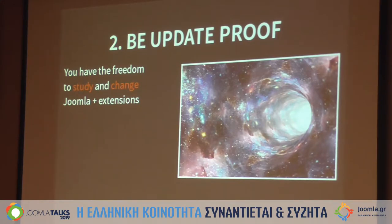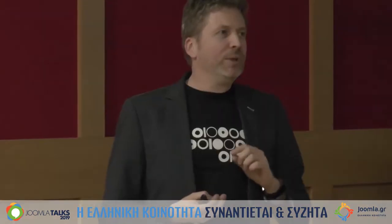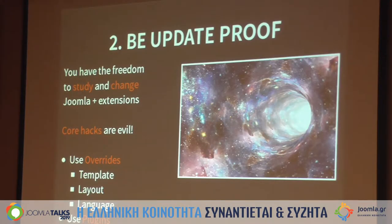The second chapter in this book is Be Update Proof. You can change anything in Joomla and extensions — study it and change it, because the source code is open source. However, that doesn't mean you have to change everything, because core hacks are evil. If you change something in the core and there's an update, your changes may be overwritten. Instead, use overrides: template overrides, layout overrides, language overrides, or use plugins — those will not be overwritten.